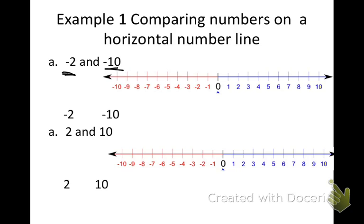I'm first going to plot those two numbers on my number line. I'm going to use blue because I'm in the negative. I have negative two right here — I'm going to put a dot there — and negative ten. If I start at negative two and I move to the left, I know that negative ten must be smaller. Negative two is larger. I want to point at the smaller number, so I'm pointing at negative ten because that's smaller than negative two.